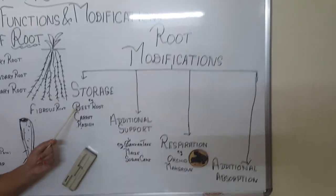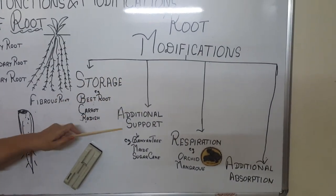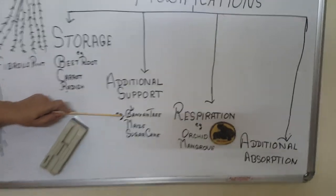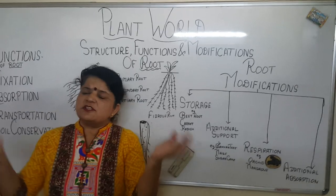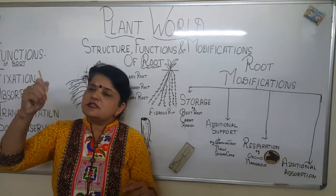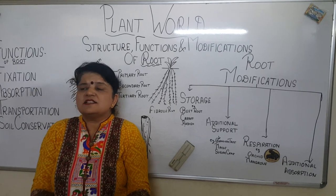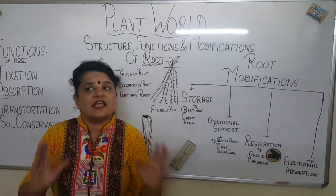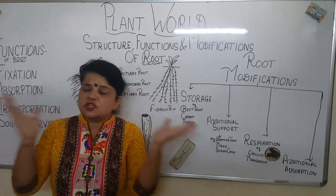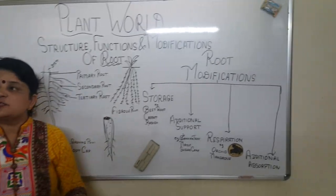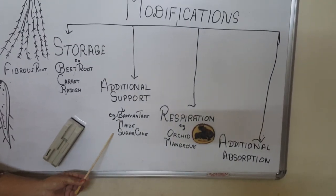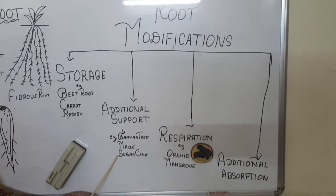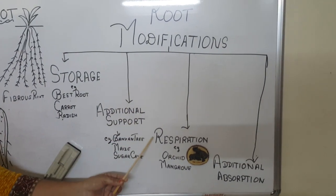Roots also provide additional support. In a banyan tree, which is very huge, the branches develop roots that grow downward and attach themselves to the soil, acting like pillars to support the large tree. We call these prop roots. This is also found in maize and sugarcane.